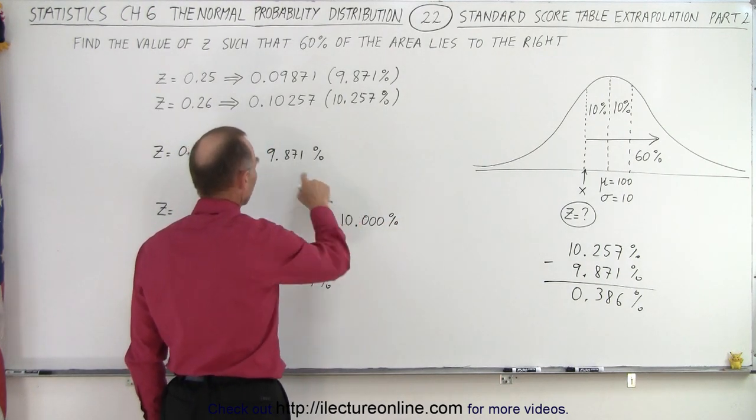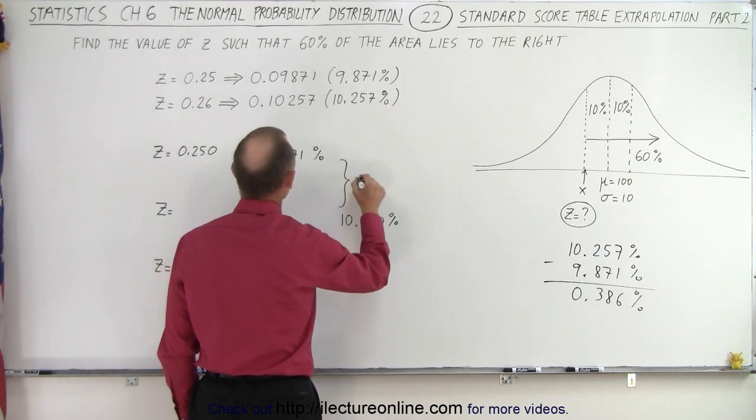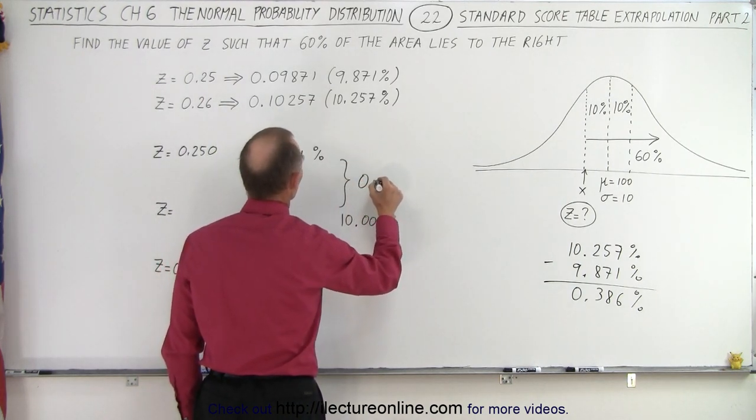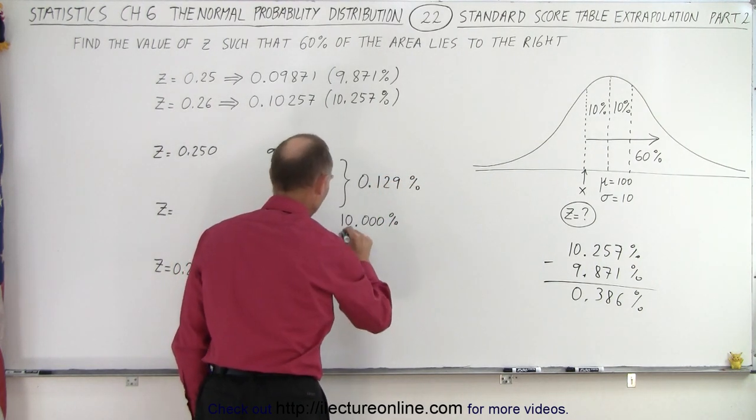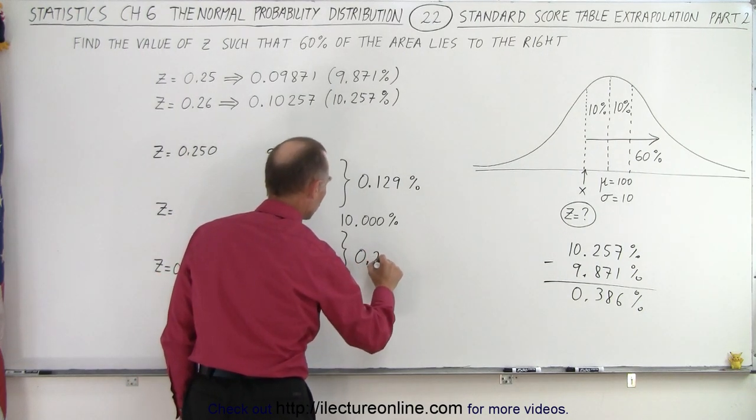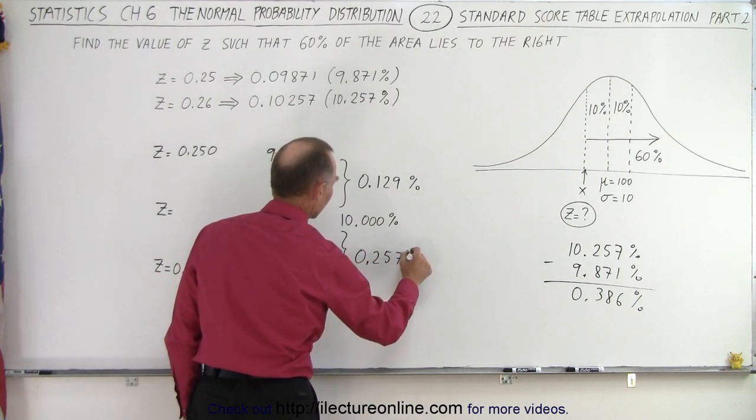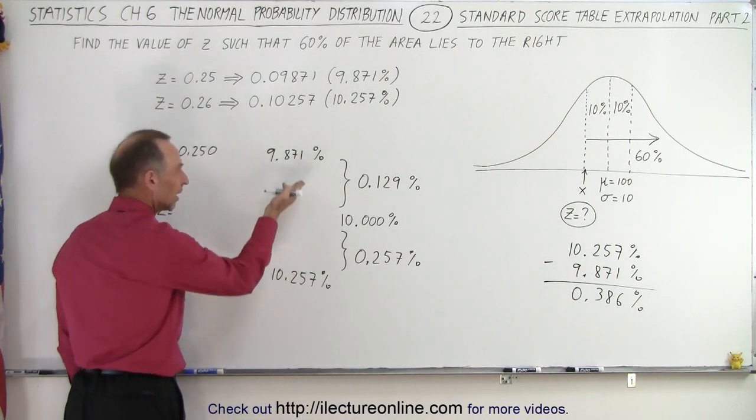So first of all, the difference here between this and this number, that would be the delta, that would be 0.129%, and the distance between here and here would be 0.257%. So you can see that the number is closer to this than it is to that.